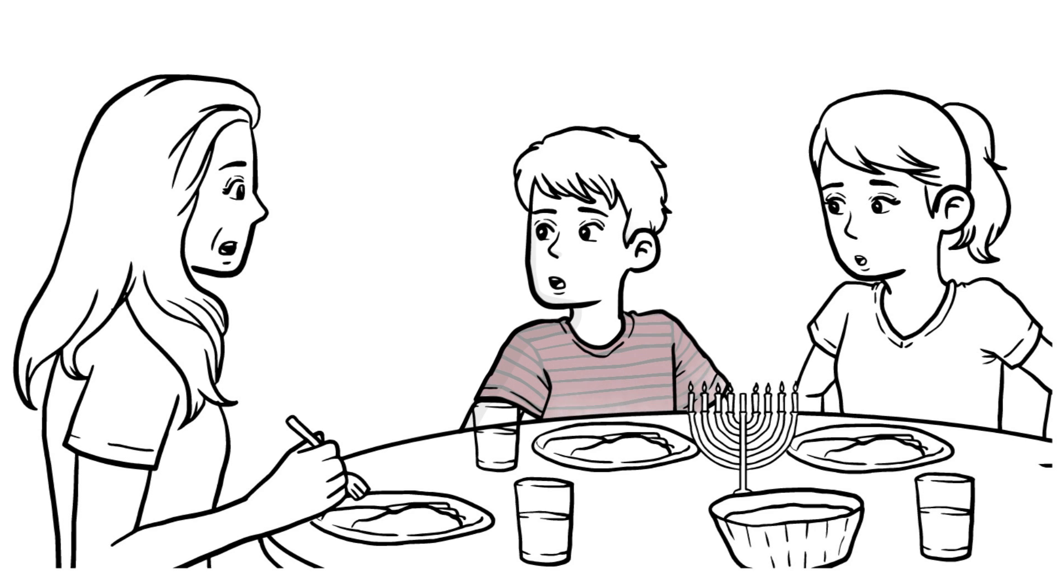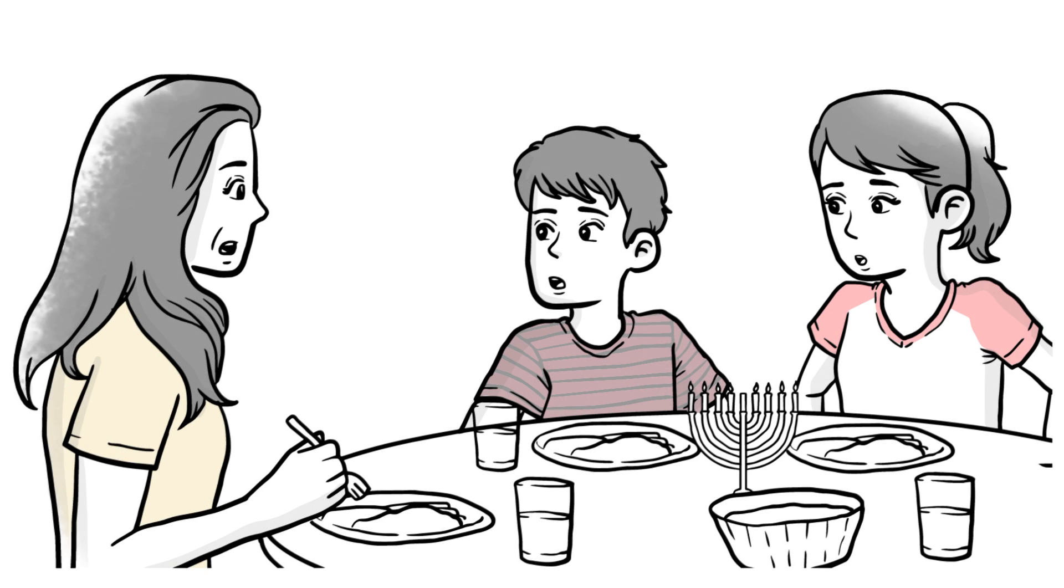Joan tells the story of Joseph and his brothers. Afterward, she gets the kids talking about the meaning of the story with some simple but effective questions that help them relate the events to their experiences.